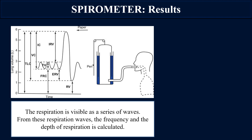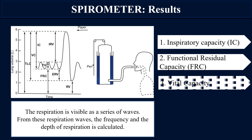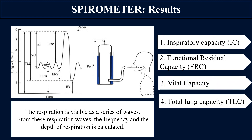Capacities that contain residual volume cannot be measured by the spirometer. The spirometer can measure inspiratory capacity, vital capacity, and total lung capacity. It cannot measure functional residual capacity because it contains residual volume. So functional residual capacity will not be measured by this spirometer, while inspiratory capacity, vital capacity, and total lung capacity will be measured.